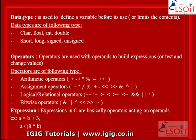Data types. Data types is used to define a variable before it's used. किसी भी variable को use करने से पहले हमें उसका data type define करना जरूरी है, तभी compiler को पता चलेगा कि उस variable के लिए उसे कितनी memory save करनी है.